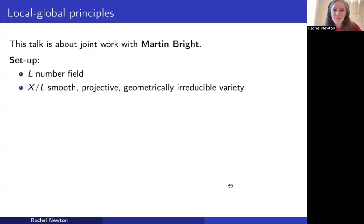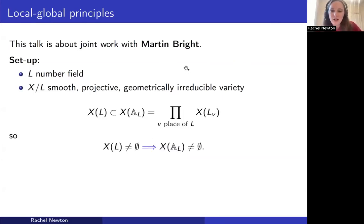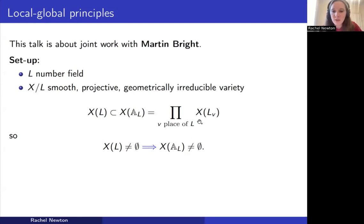The work I'm going to talk about today is joint with Martin Bright. My setup is that L is a number field and X will be a nice variety over L. By nice, I mean smooth, projective and geometrically irreducible. I'm interested in studying the rational points on X over L. We do this by embedding them in the set of adelic points, which since X is projective, is just the product over all the places V of L of the points on X over the completion of L at the place V.